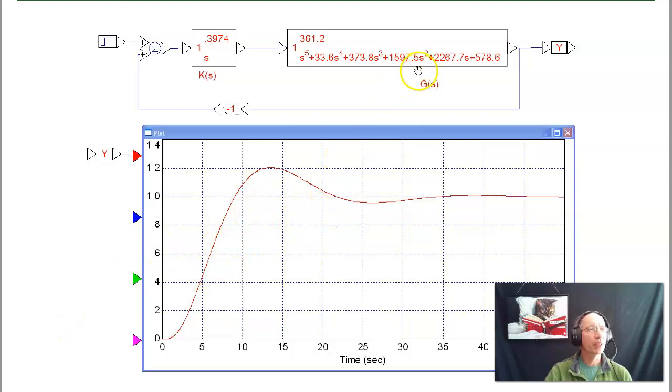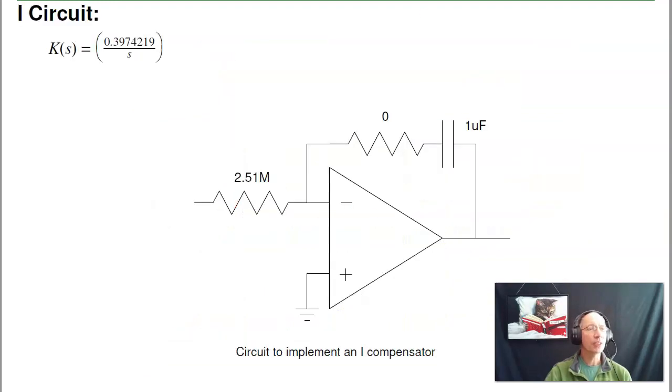You can also check your design in VisSim, as well as MATLAB. In VisSim, I input the plant, here's my compensator with negative feedback. Tell it to run. And here I've got 20% overshoot, just like I wanted. And settles that in about 40 seconds. It also goes to one. It's a type 1 system, so it should track a constant set point. So that's integral control.